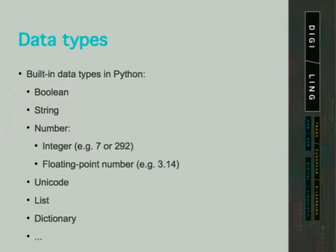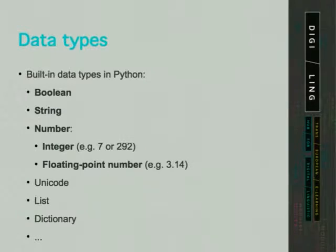Later in this course we will also learn about other data types like the Unicode data type, lists, and dictionaries. There are also other data types like tuples and sets. But for now we will cover numbers, strings, and booleans.